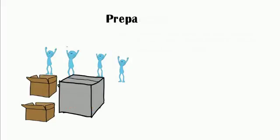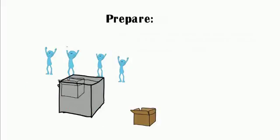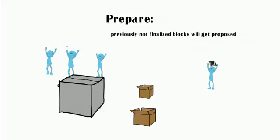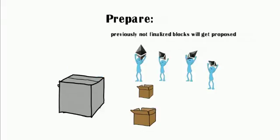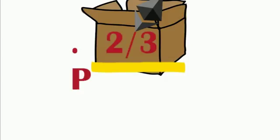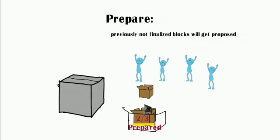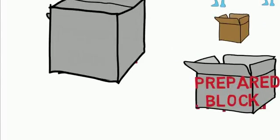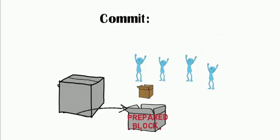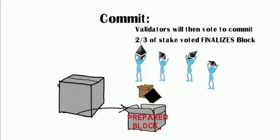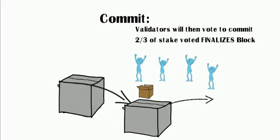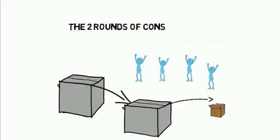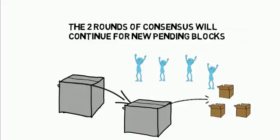The process then repeats again with a to-be-determined proposal method prioritizing a block or a validator, and a two-thirds vote of staked Ether will then prepare the proposed block. The prepared block will then enter the commit stage, where a two-thirds vote of staked Ether will finalize the prepared block to the blockchain. This two-stage consensus building process will continue on any new pending blocks on the Ethereum network.